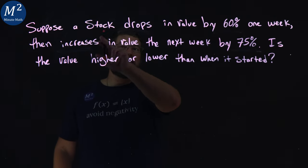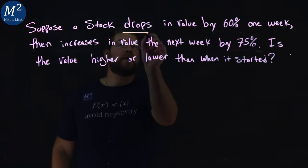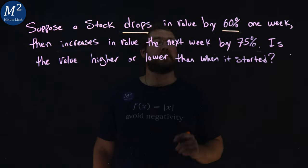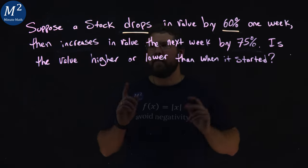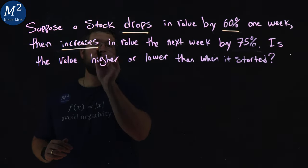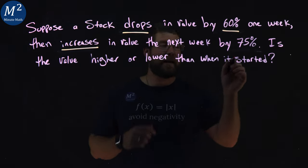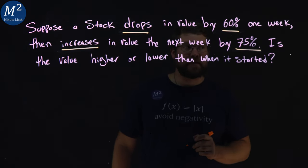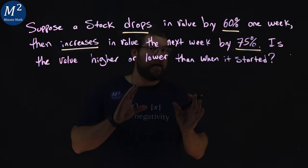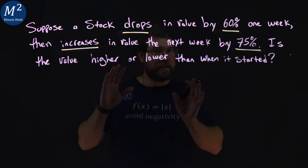We first notice the first word says the stock drops, key term here, by 60% one week. Then the next part, it increases in value the next week by 75%. We want to find at the end, is this value lower or higher than the initial amount?